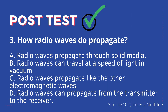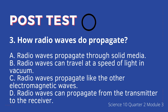3. How do radio waves propagate? A. Radio waves propagate through solid media, B. Radio waves can travel at the speed of light in vacuum, C. Radio waves propagate like the other electromagnetic waves, D. Radio waves can propagate from transmitter to the receiver.